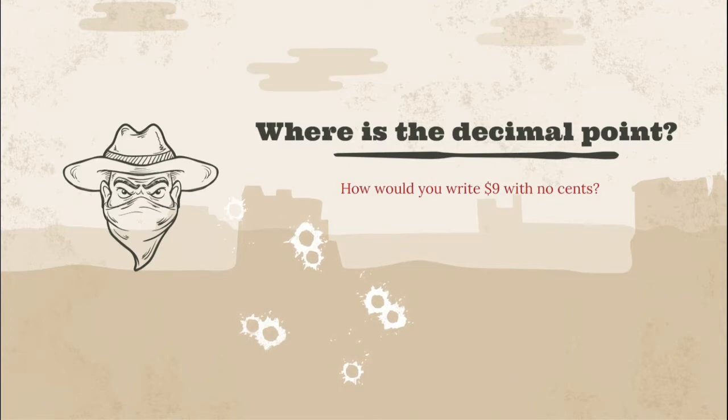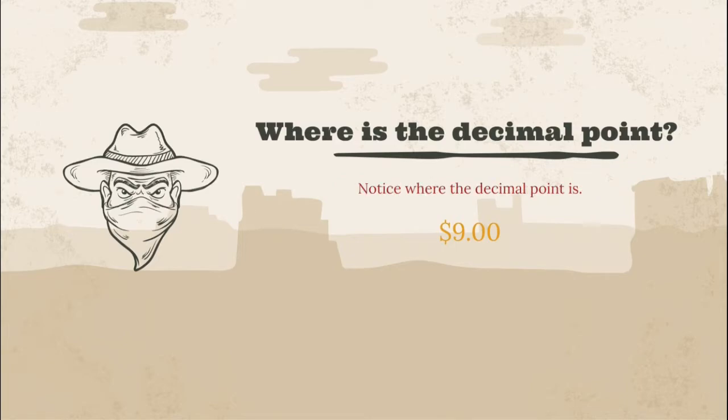So what happens when your number appears to not have any decimal points? How would you write nine dollars if there are no cents? Well, we would just put a decimal and two zeros. There it is, nine dollars. Notice where the decimal point is. We put that decimal point to the right of that nine, to the right of the whole number. We added a couple zeros in this case because it was money.